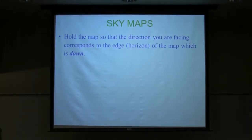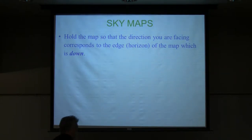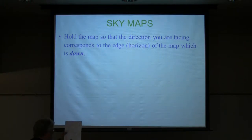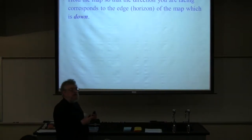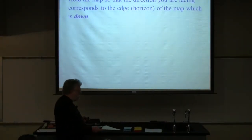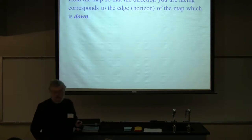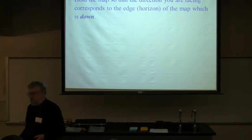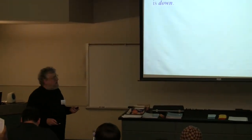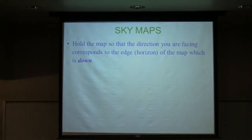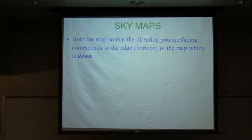If you hold the map with the direction you're facing corresponding to whatever edge of the map is down — most of you are facing north, so hold the map with the north side down — you would see that part of the sky outside. If you turn around and face east, hold the map with the east side down, and that corresponds to what you see in that part of the sky. The compass directions are marked on the planisphere around the horizon, which is the edge of the map.